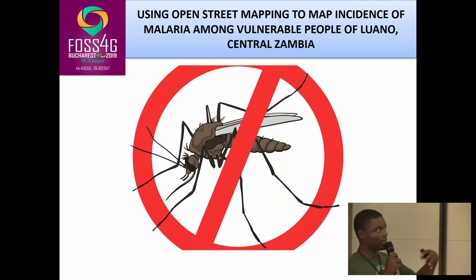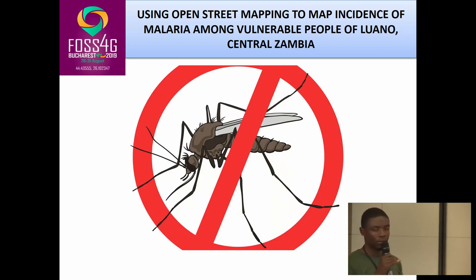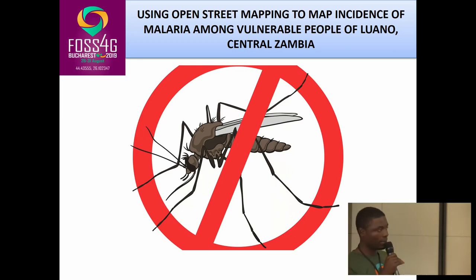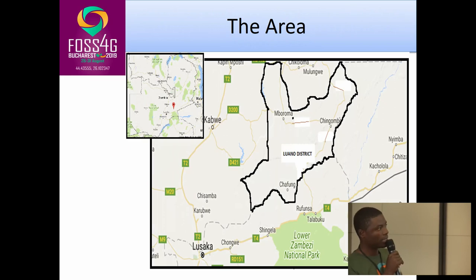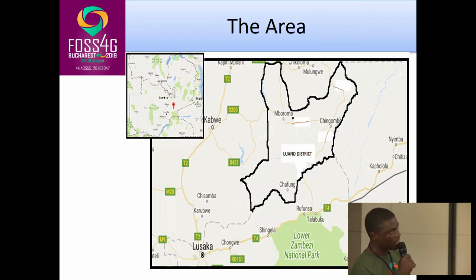This project is looking at how best OpenStreetMap can help us understand the vulnerability of people who are in the rural parts of Zambia. We started this last year but we're still doing it because there are a lot of things that we want to do.